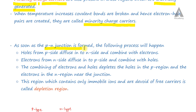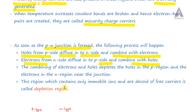As soon as the PN junction is formed, the following process happens: holes from the p-side diffuse into the n-side and combine with electrons. Similarly, electrons from the n-side diffuse into the p-side and combine with holes. The region around the junction contains only immobile ions and no free charge carriers — that region is called the depletion region.